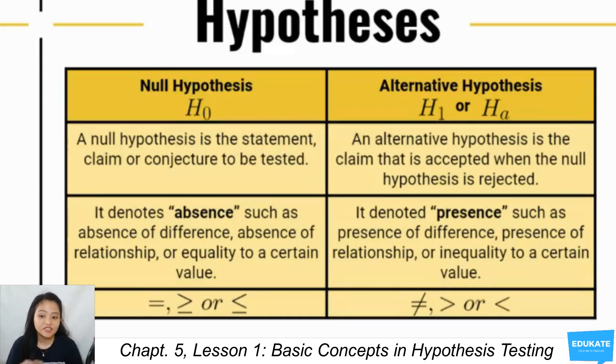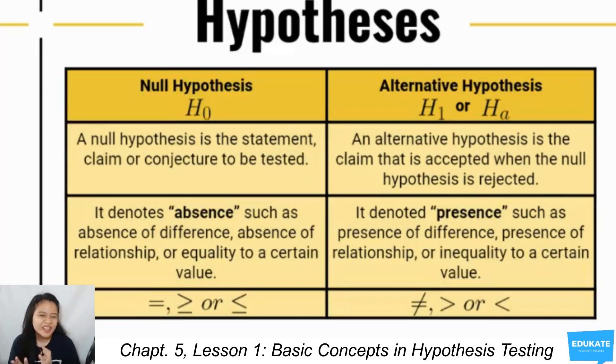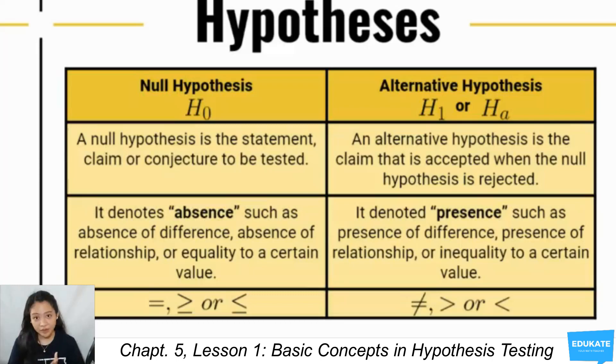In symbols, your null hypothesis uses equal to, less than or equal to, and greater than or equal to. Your alternative hypothesis in symbols uses not equal to, greater than, or less than.